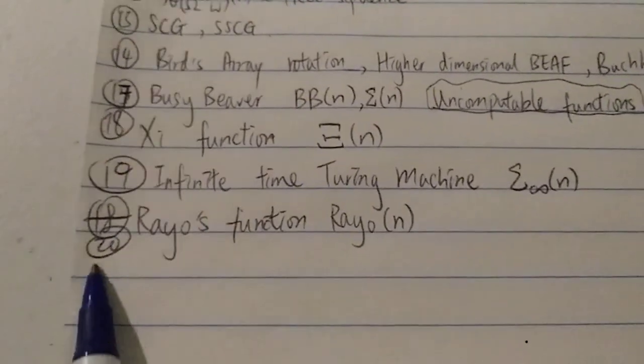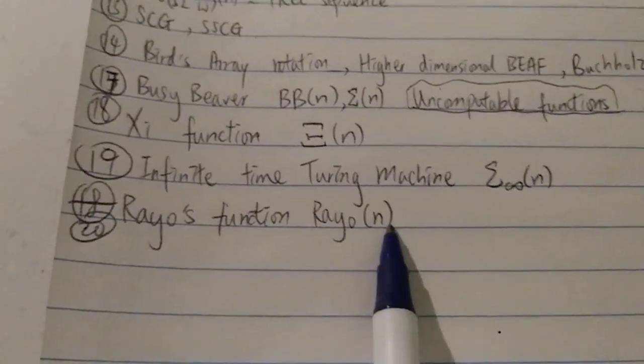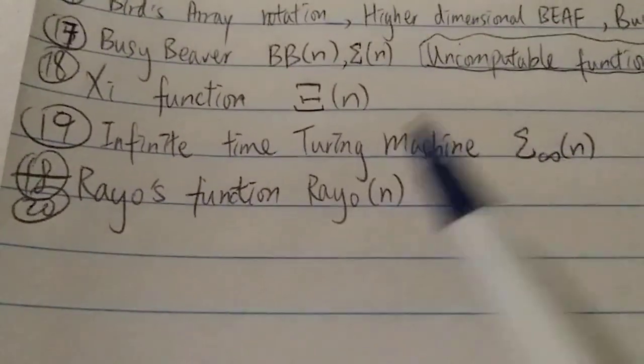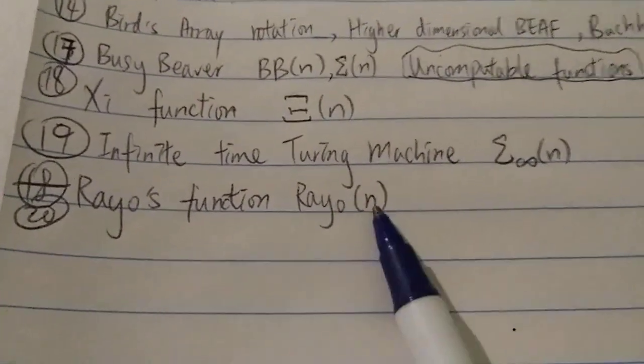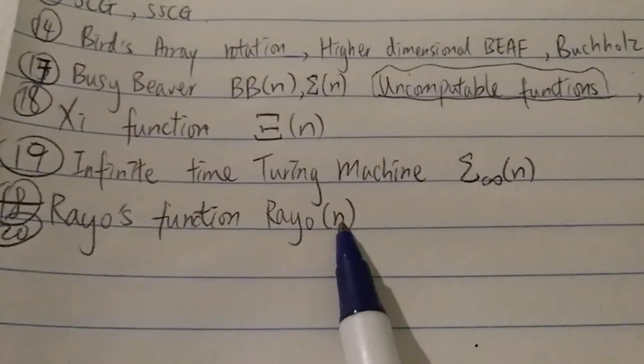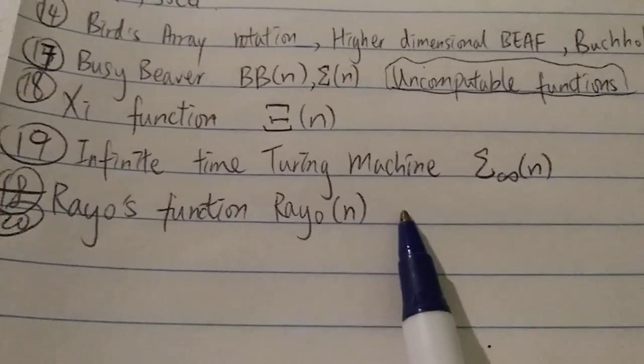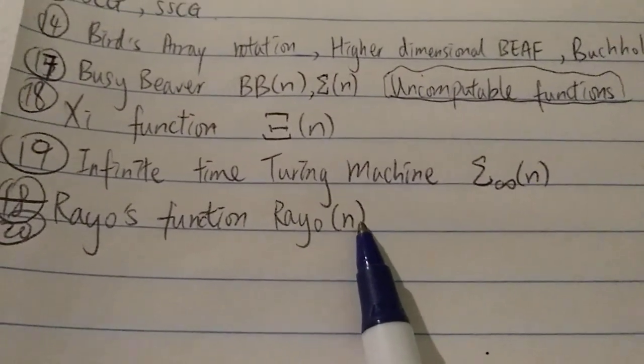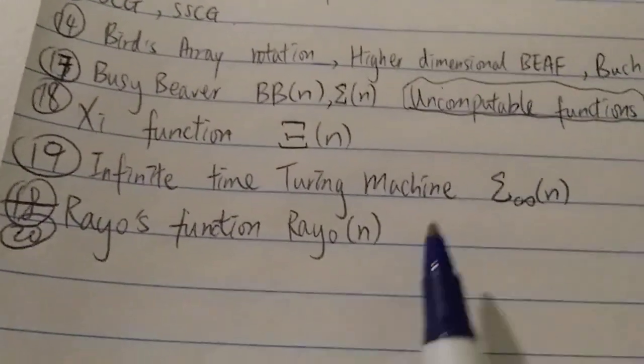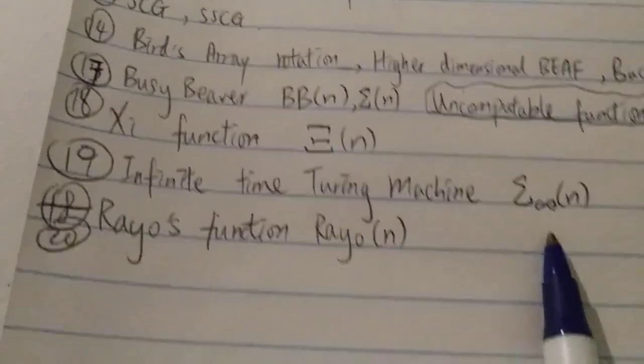And lastly, level 20, we have Rayo's function, of course, Rayo(n). One of the biggest numbers ever defined is, of course, Rayo's number, which is defined by Rayo(n). And one thing to note, Rayo's number for small n, it doesn't grow very fast. In fact, I think Rayo(20) is 1. And Rayo probably around 50 equals 2, something like that. So for a small integer n, Rayo's function grows very, very slow.